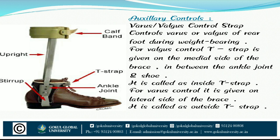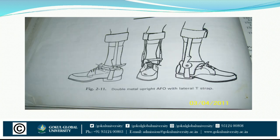The parts of the AFO include: calf band, uprights, stirrups, T-strap, and orthopedic ankle joint. Here is a double metal uprights AFO with a lateral T-strap.